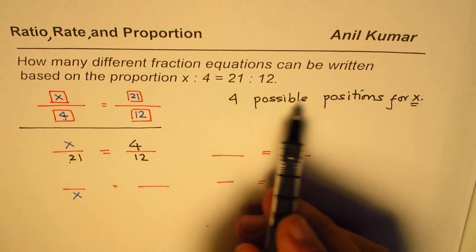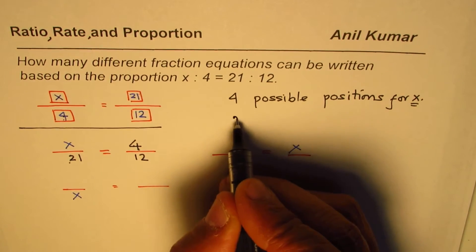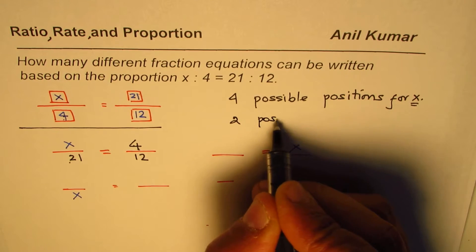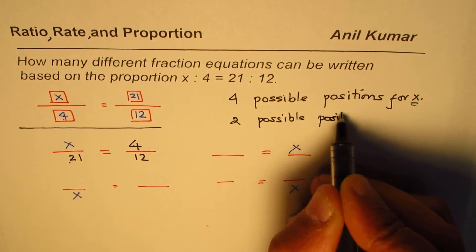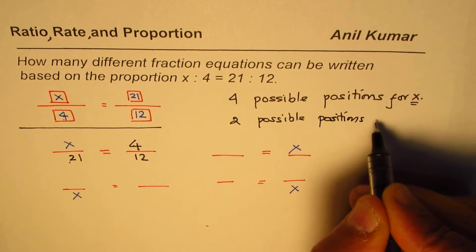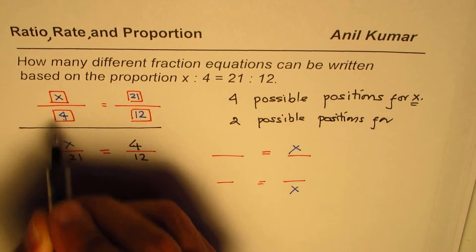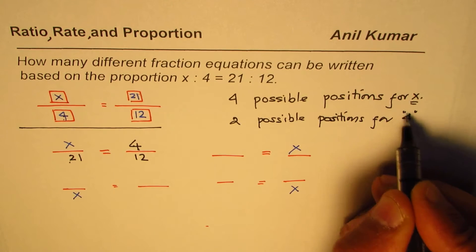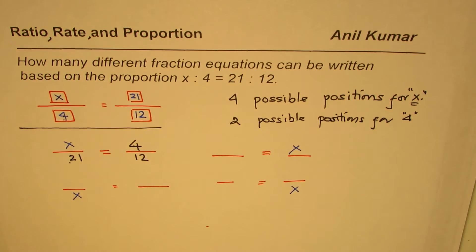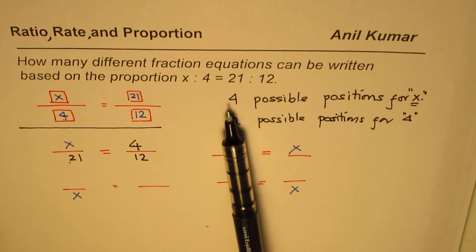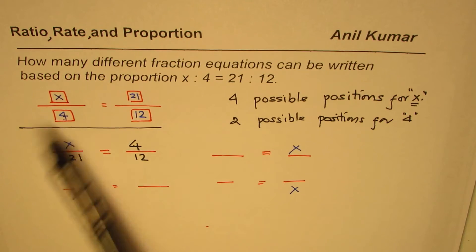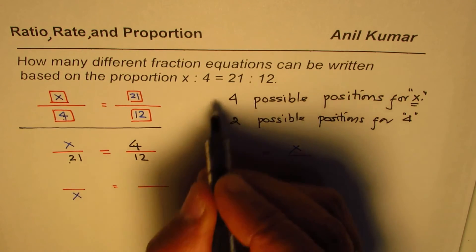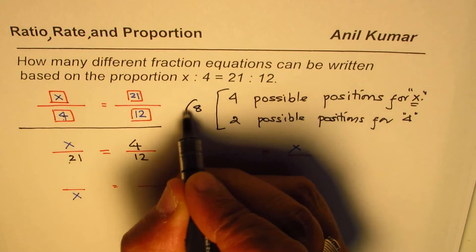So 4 possible positions for x and 2 possible positions for the number 4. Do you see that? The number 4. So 2 possible. So for every position of x, that means we have two other positions of 4, that makes total of 8 cases. Is that okay?